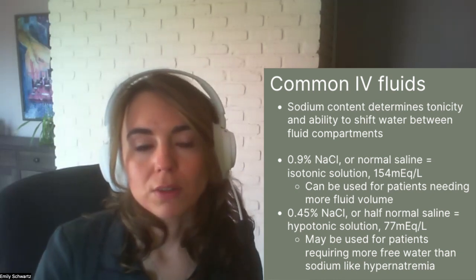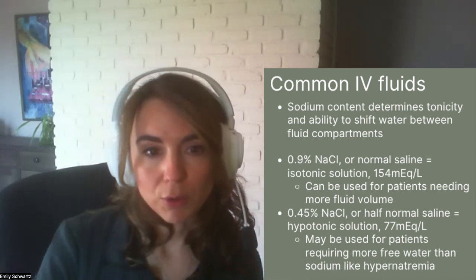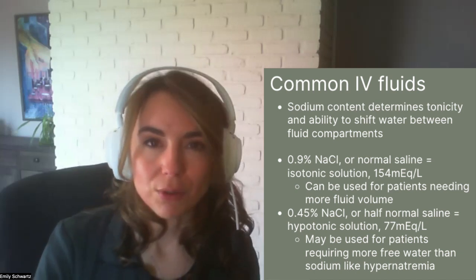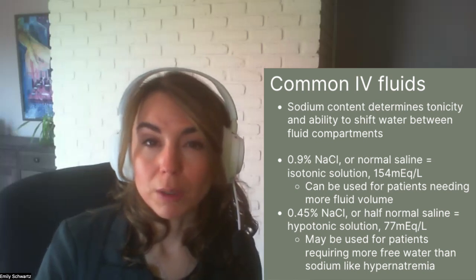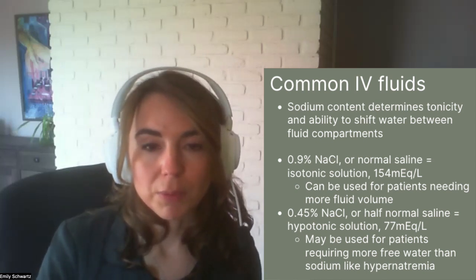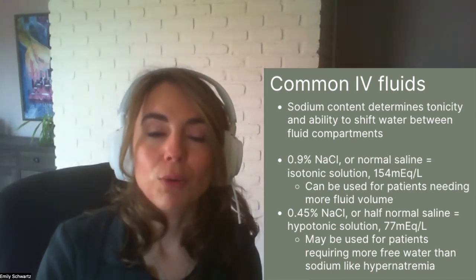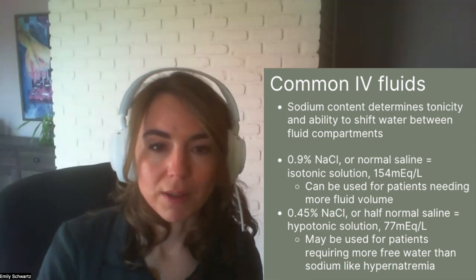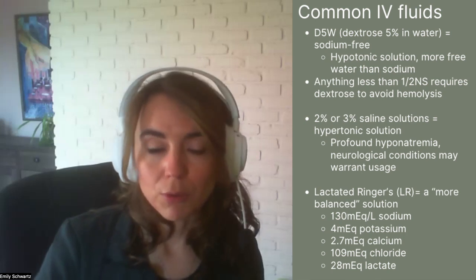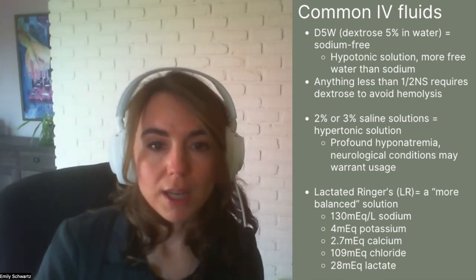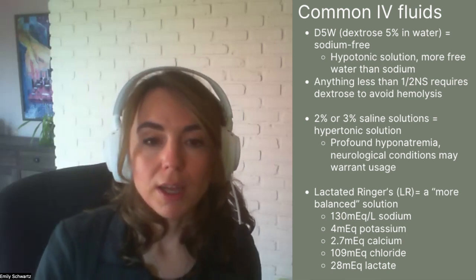We may also see hypotonic solutions. One example is half normal saline or 0.45% sodium chloride — half the sodium concentration of normal saline. We use hypotonic solutions when the patient needs proportionally more free water than sodium. For example, if we have a patient with an elevated serum sodium level or hypernatremia, they may require a hypotonic solution to bring that serum sodium level back down. We may also see completely sodium-free solutions like D5W or 5% dextrose in water, an even more hypotonic solution used when a patient needs much more free water than sodium.